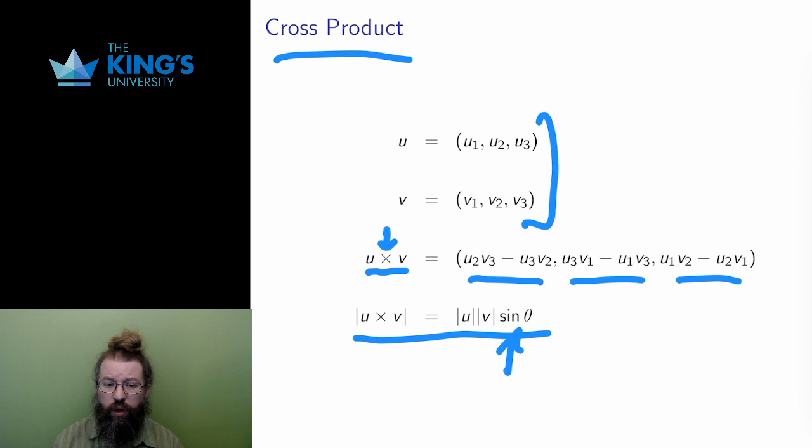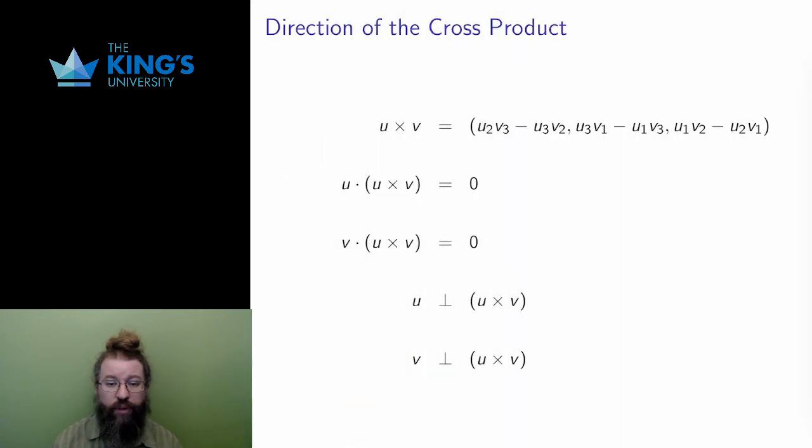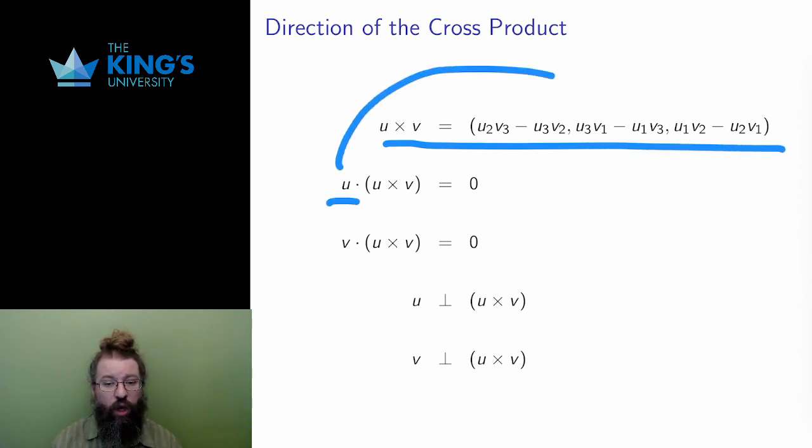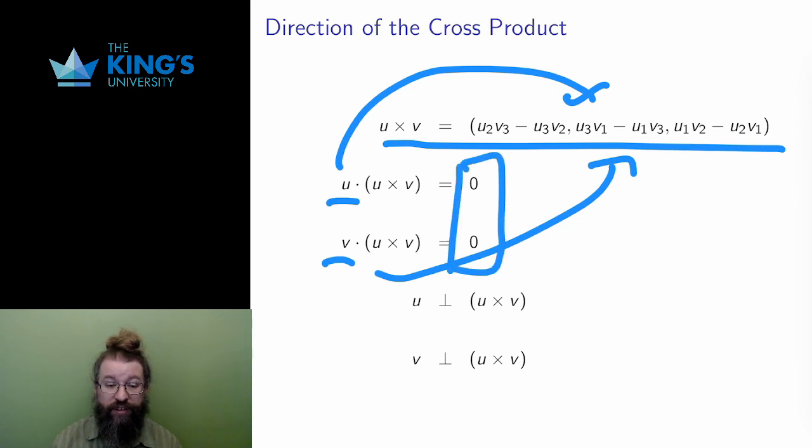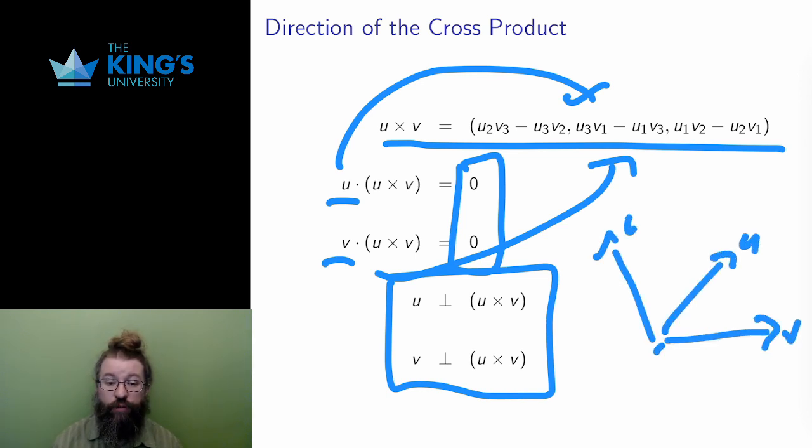But there is yet more going on here with directions, so let me elaborate. If I take this strange formula, I can calculate the dot product of u or v with the output of the cross product. I'll not trace through the entire algebra here, but the result of this dot product is the zero vector. I just said a bit before that the zero dot product means that the vectors are perpendicular. What's the conclusion here? The conclusion is that the cross product of u and v is perpendicular to both inputs. The symbol here is the standard way of indicating two vectors are perpendicular.